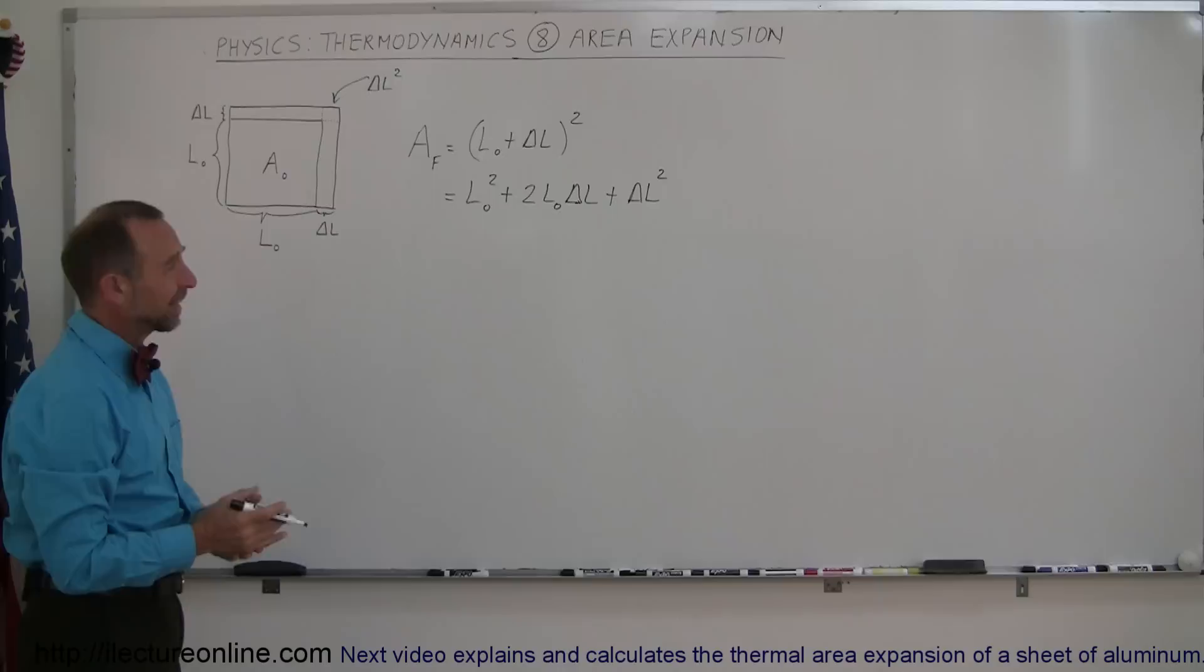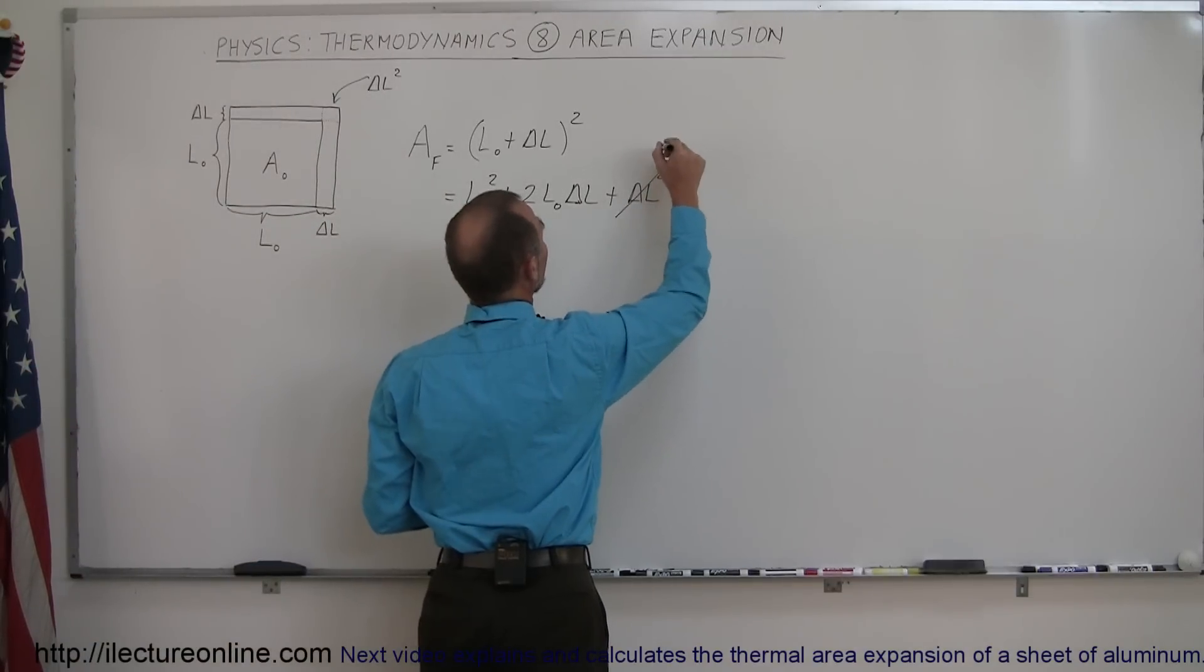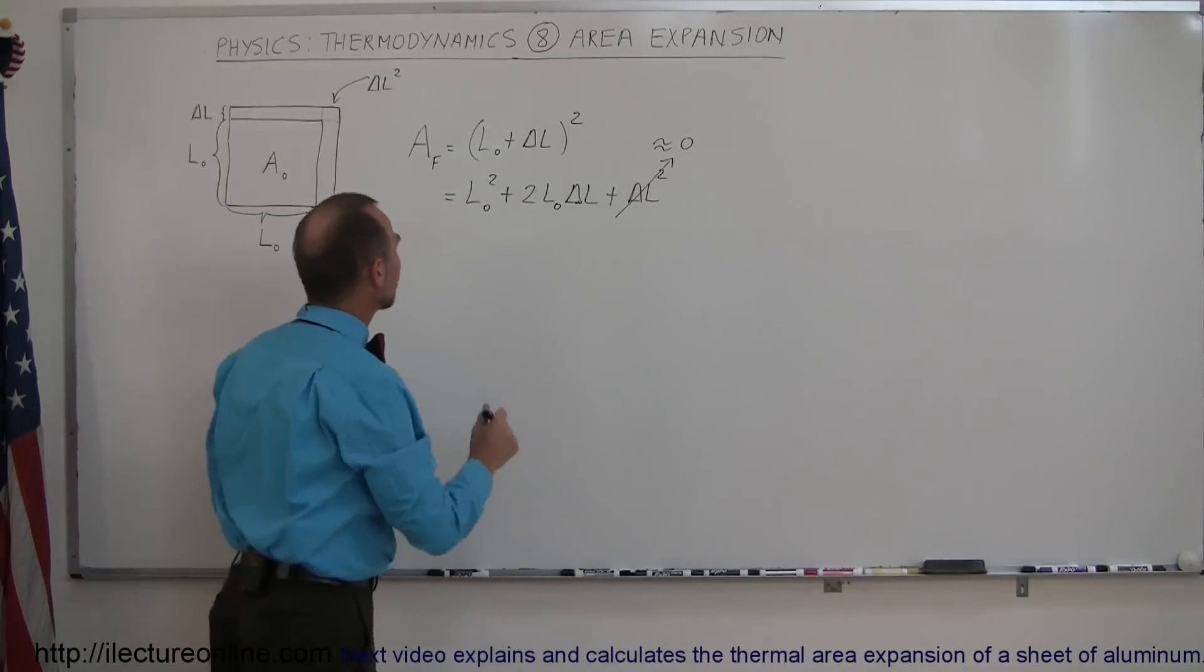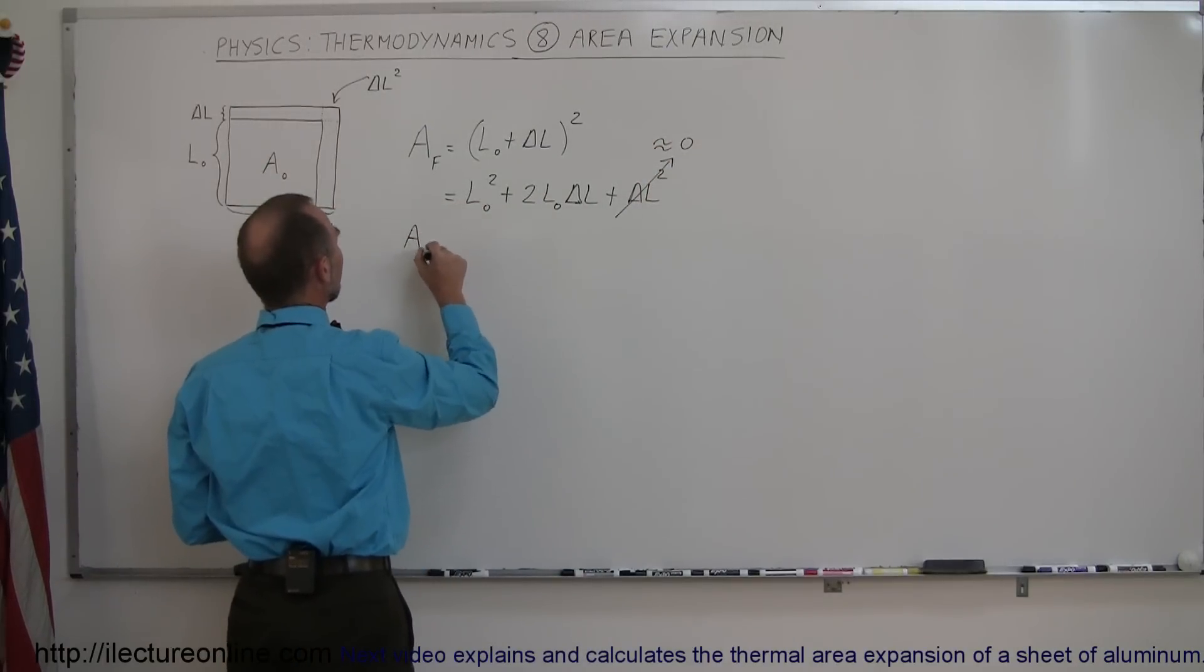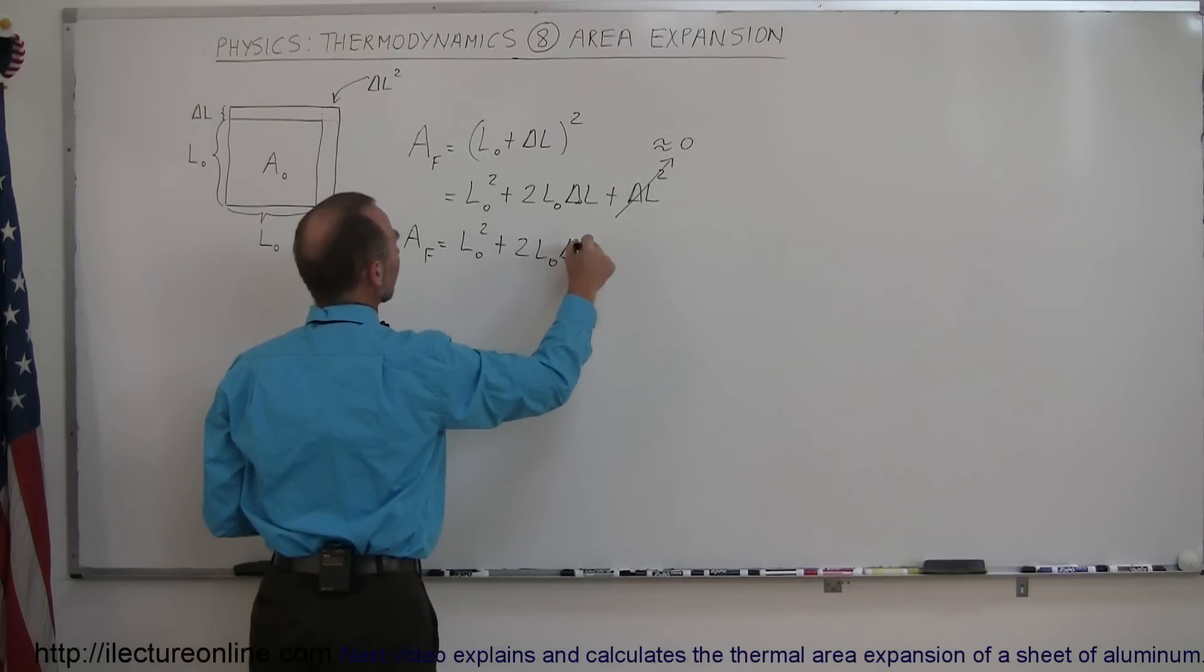Now, turns out that delta L is so small, we can probably just ignore it, so we're just going to assume that this is approximately equal to zero. Which means that the final area is simply going to be equal to L sub nought squared plus two L sub nought delta L.